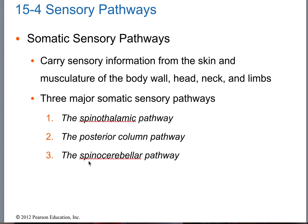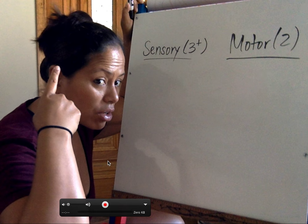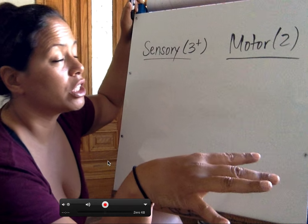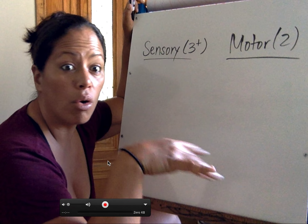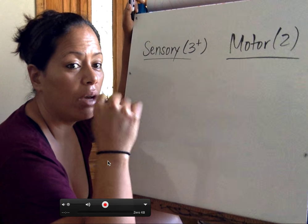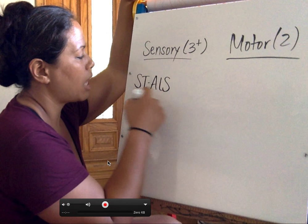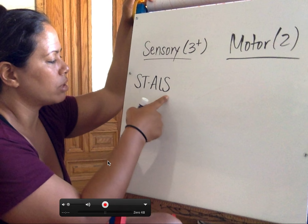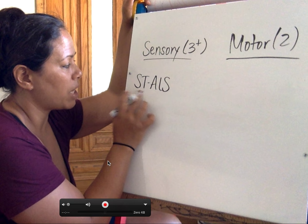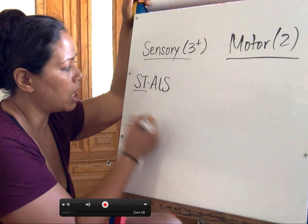The two pathways I require you to know are STALS — the spinothalamic anterolateral system — and DCML, the dorsal column medial lemniscus. Don't confuse STALS with ALS or Lou Gehrig's. For those going to medical school, just remember these two pathways are connected. Dorsal column on your textbook is referred to as posterior column — dorsal and posterior mean the same thing.